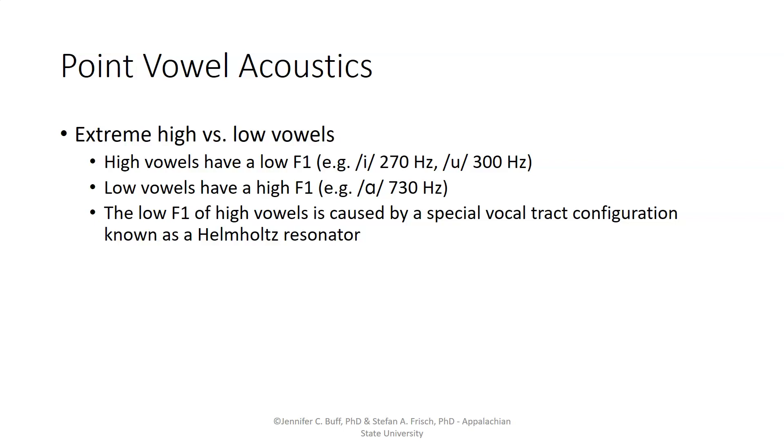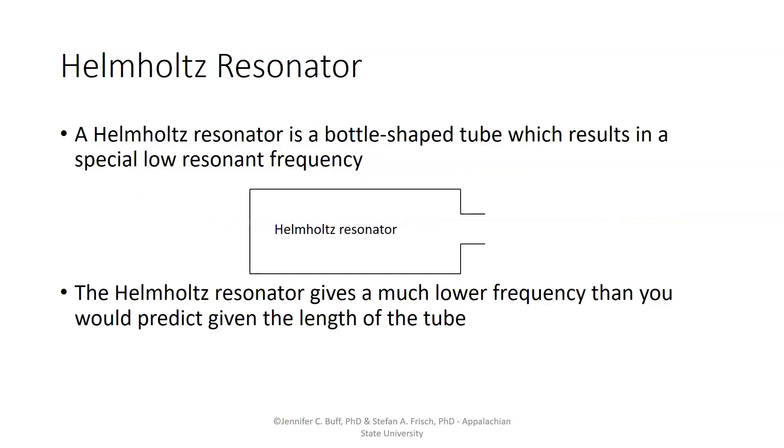The low F1 that we get for high vowels is caused by that constriction in the vocal tract, creating something known as the Helmholtz resonator, named after a German acoustics researcher named Helmholtz. The Helmholtz resonator is a bottle-shaped tube that results in an especially low resonance frequency relative to the size of the tube. So, the Helmholtz resonator gives you a much lower frequency than you would predict, given what the length of the tube is.